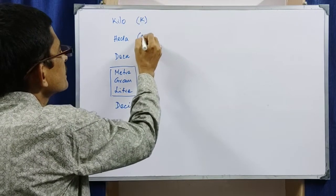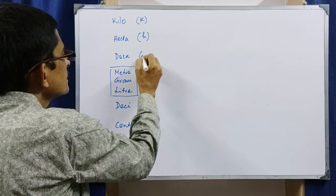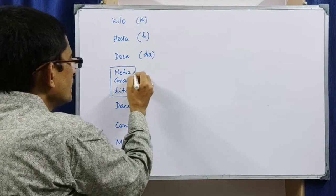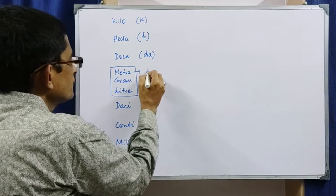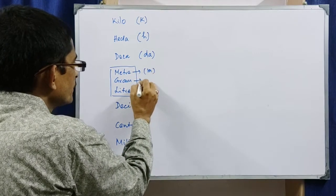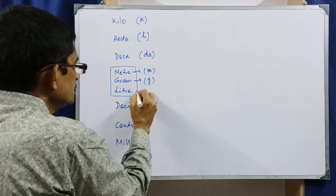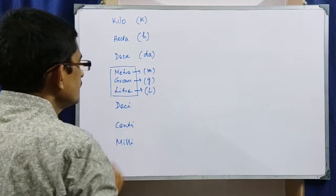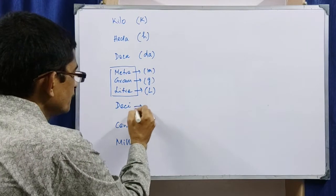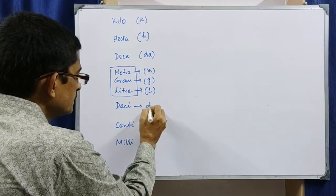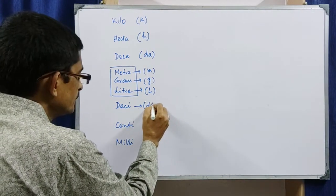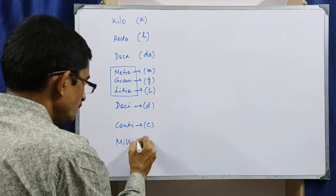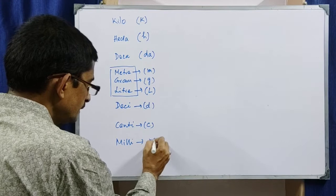We have to use these letters as symbols: small k for kilo, small h for hecto, small 'da' for deca. For meter, we write small m; for gram, we write small g; but for liter, we write capital L. For deci, we write small d; for centi, small c; and for milli, small m.